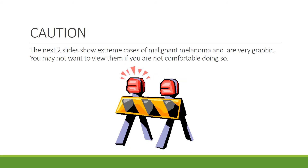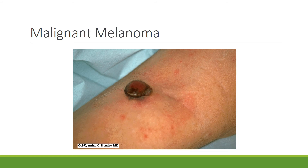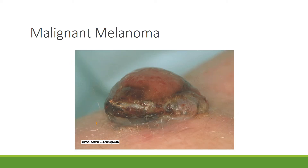The next two slides show extreme cases of malignant melanomas and they're very graphic — you may choose not to view them. Here is a malignant melanoma of the arm. Remember that malignant melanomas are the most dangerous of the three types of skin cancer. Here is a more advanced malignant melanoma of the arm; at this stage it has probably gotten into the bloodstream and been carried to other places in the body.